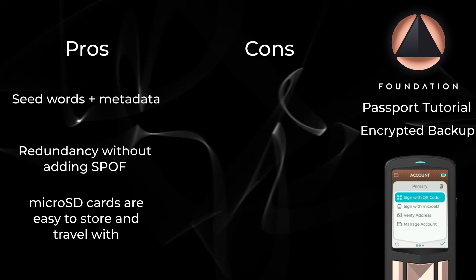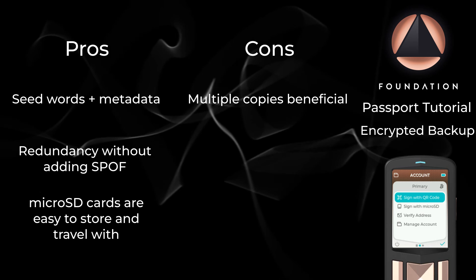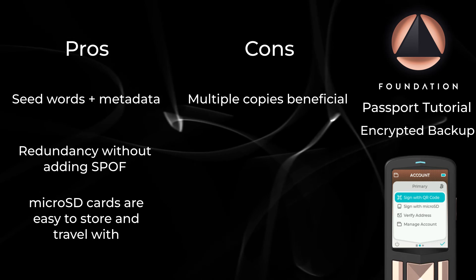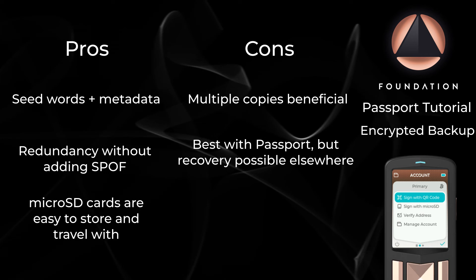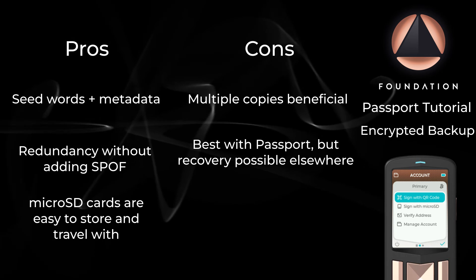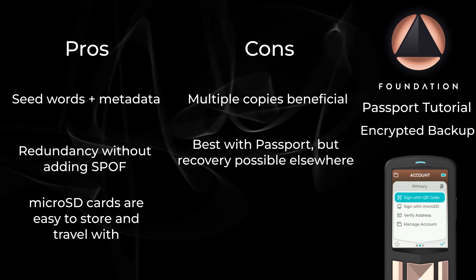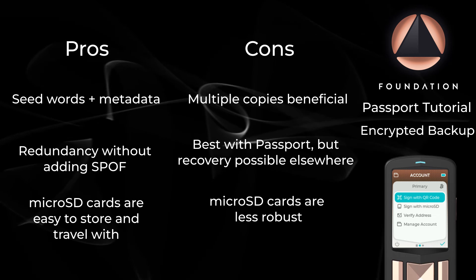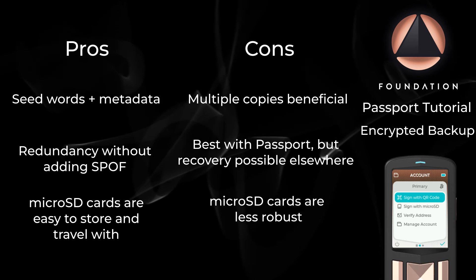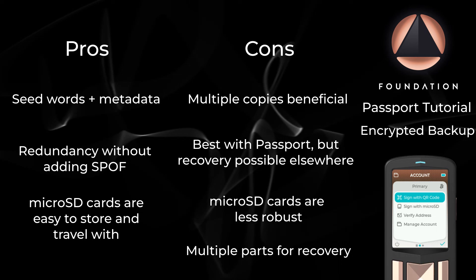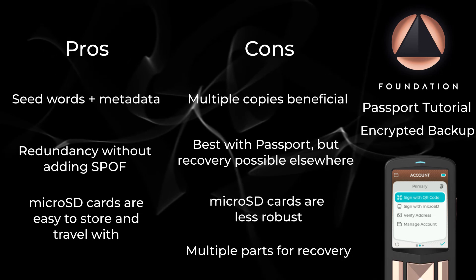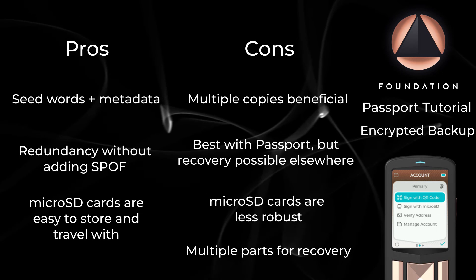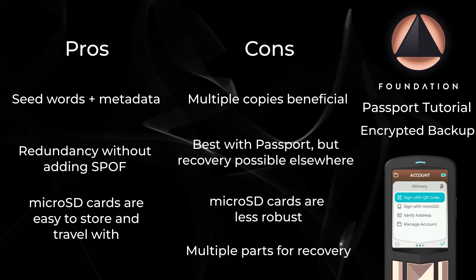Cons: Keeping a single copy of either part does not protect against single points of failure, although as we covered in this scenario, this is easily mitigatable. Encrypted backups are somewhat unique to Passport, although recovery is possible using a computer as a last resort. Micro SD cards, even industrial grade ones, are not resistant to fire, water or crushing. And finally, having your heirs deal with two pieces of information — the physical SD card containing the encrypted file and the 20-digit backup code — is slightly more for your heirs to deal with in the unlikely scenario that you're not around.